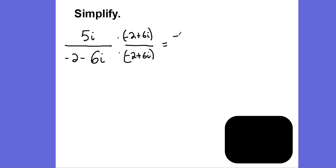5i times negative 2 would be negative 10i. 5i times 6i would be plus 30i squared.